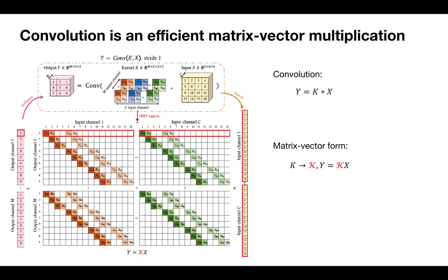In general, a convolution is an efficient matrix vector multiplication. Given a convolutional kernel K, the corresponding matrix is a doubly blocked toeplitz matrix.